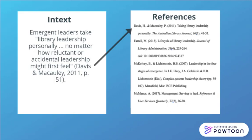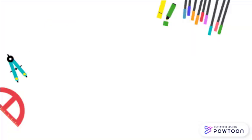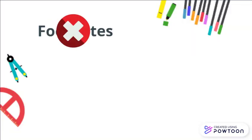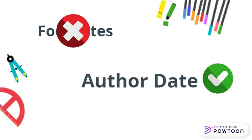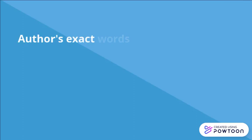Any time you quote or paraphrase someone else's words or ideas within the body of your paper, you must give credit to the original author. APA style in-text citations do not use footnotes — it follows the author-date method. When quoting an author's exact words, place quotation marks around the text, then include your in-text citation.